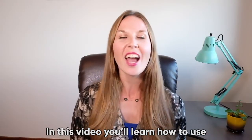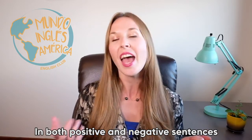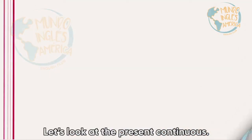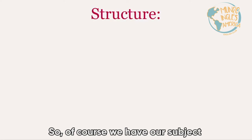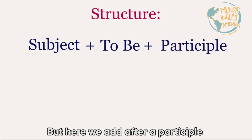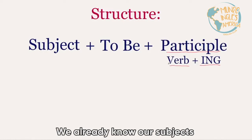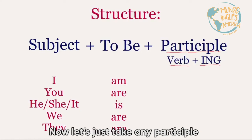In this video you'll learn how to use the present continuous verb tense in both positive and negative sentences, and of course asking questions as well. Let's look at the present continuous structure. We have our subject, then we take the verb 'to be', and after that we add a participle. A participle is simply your verb with -ing.